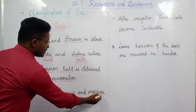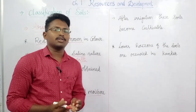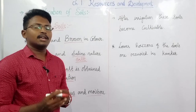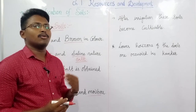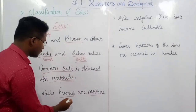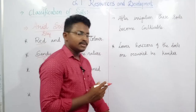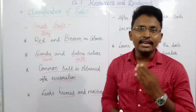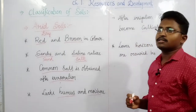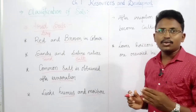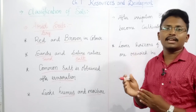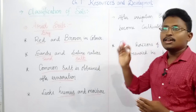Arid soils lack humus as well as moisture because they are found in dry regions where high evaporation takes place due to hot climatic conditions. However, if these soils are properly and continuously irrigated, they can be cultivated and used for agriculture.